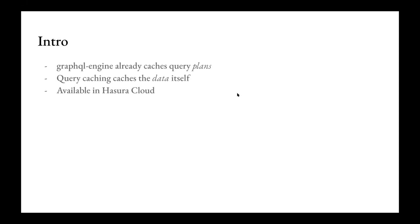So as a quick introduction, GraphQL engine already does a form of caching, which is to cache the query plans that we produce. If you execute the same query in succession, you wouldn't need to pay the cost of planning the query to prepare the SQL every single time — that would be done once and cached in memory. That gives us a good performance boost. But in Hasura Cloud, we're going to have a new form of caching — query caching — which caches the data itself that we get back from Postgres and other data sources. It's available in Hasura Cloud today.